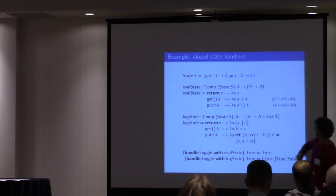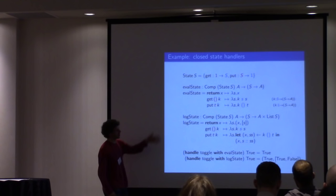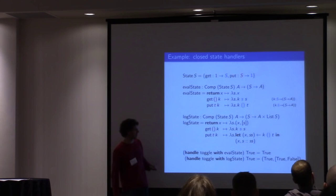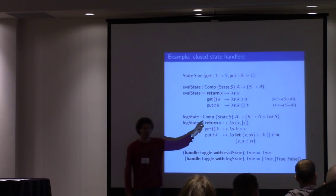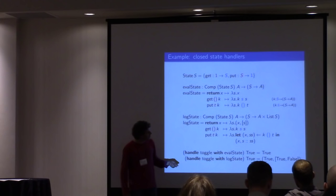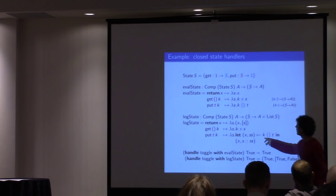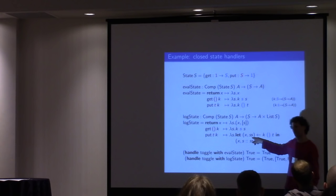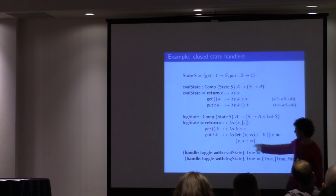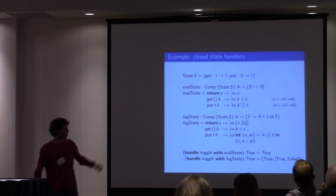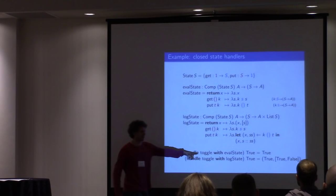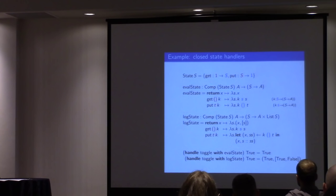The more interesting case is you can define other handlers that, say, enrich your state somehow. This log state handler, instead of just returning a value, also returns a list of all the values the state has ever held. Rather than just returning the current state on get, it reads off the list of states. Having defined these, we can run them. The toggle example runs to true, then it becomes false.